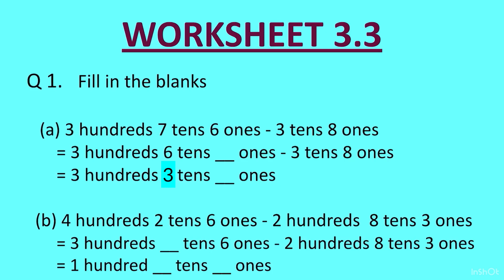Similarly in the tens column of the second question, we have 2 tens minus 8 tens. From 2 you cannot give 8, so we borrow from the neighbor, the 4 hundreds. It has already become 3 hundreds, meaning 1 hundred has come to the tens column. When it travels to the tens column, the 100 becomes 10 tens.